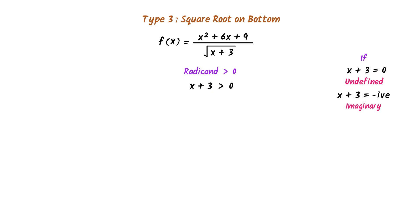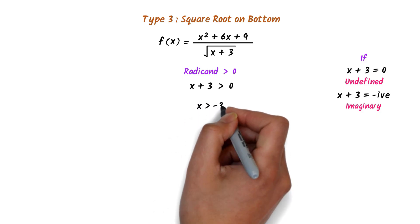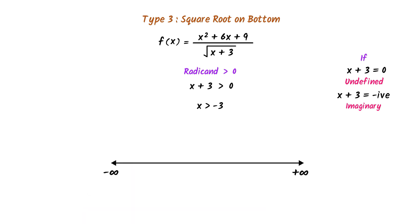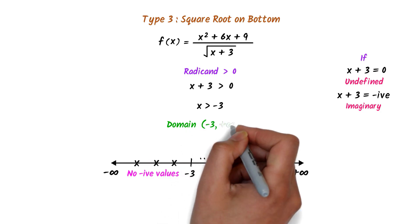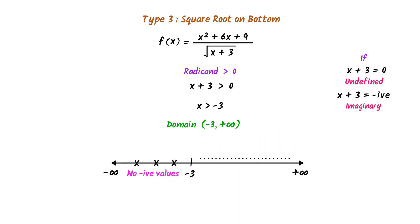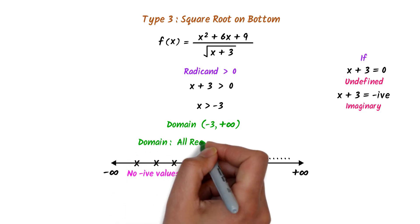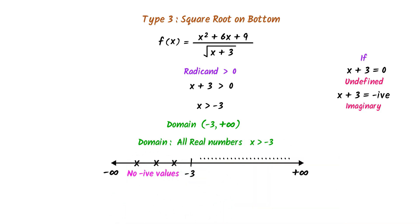Here, x + 3 > 0. Shifting +3 to the right-hand side, I get x > -3. I draw a number line and place -3 on it. Since we cannot take negative values, I cancel that region and select only the region where x > -3. Hence, the domain is (-3, +∞), or the set of all real numbers where x > -3.